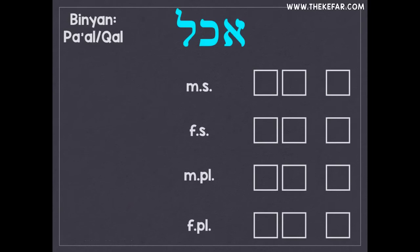You'll notice there are three boxes in each row to the right, and each one of those boxes holds each letter of your shoresh. We're going to add some additional sounds and letters depending on the form — masculine singular, masculine plural, feminine singular, or feminine plural. But the letters of the shoresh remain constant: alef appears in all the right boxes, chet in the middle boxes, and lamed in the left boxes. Other Pa'al verbs follow this same pattern — even if your shoresh is different, the letters go in the same order in these boxes.